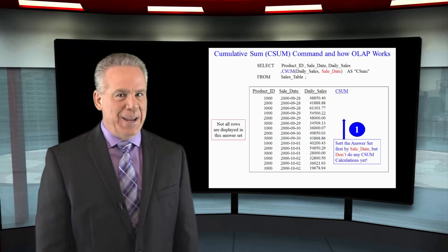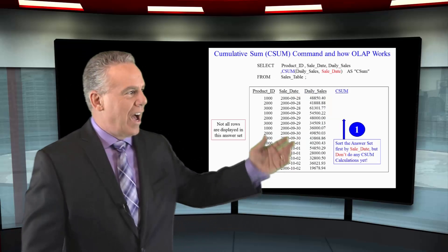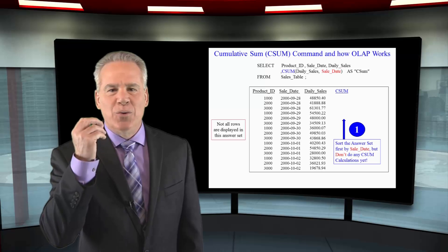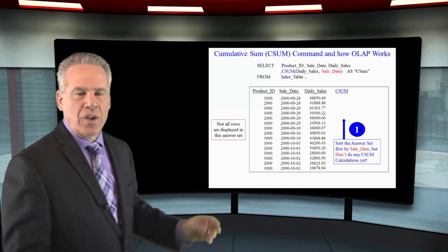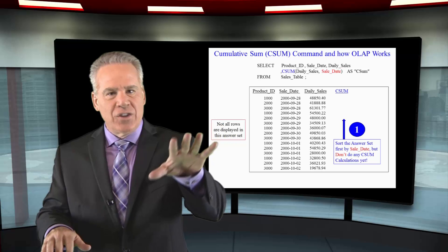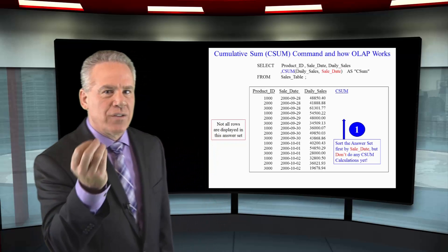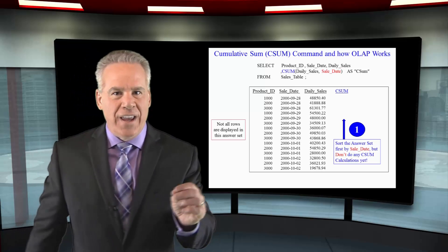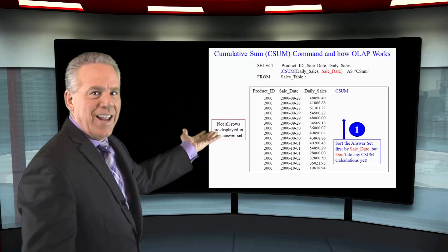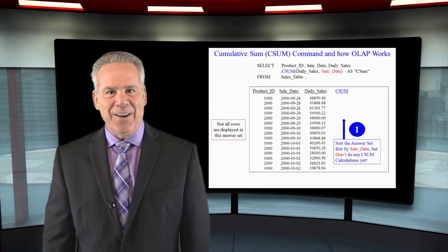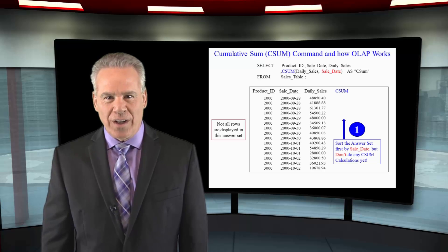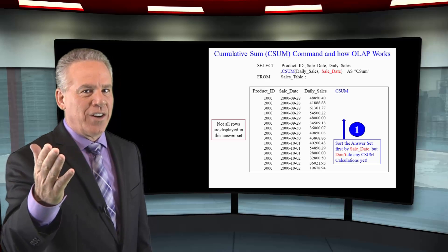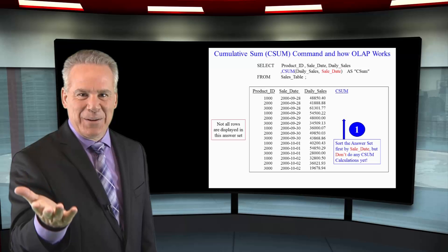Take your time but get this key point really down. I have highlighted in red the sale date — that's the sort key. We're going to do a CSUM on daily sales but only after the data is sorted by sale date. I've got this for you without the CSUM calculations yet because it's always a two-phase query. They first sort the data by sale date, and once that's sorted and the rows are ready to come back, they stop. Now it's time to calculate.